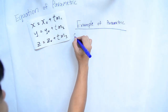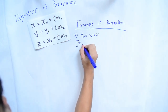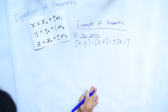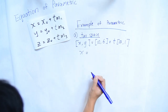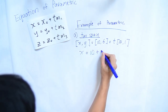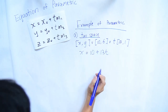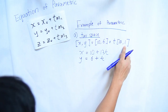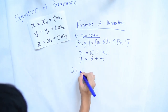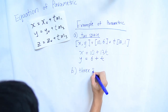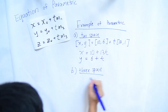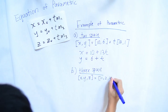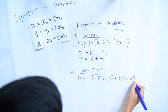Now I will give two examples of parametric equations. There are two kinds of questions: two-space and three-space. The first example is two-space. Given the equation, we know x equals 10 plus 13t, because the point is 10 and direction is 13. y equals 6 plus t, because the y point is 1 and the direction is also 1 with t.